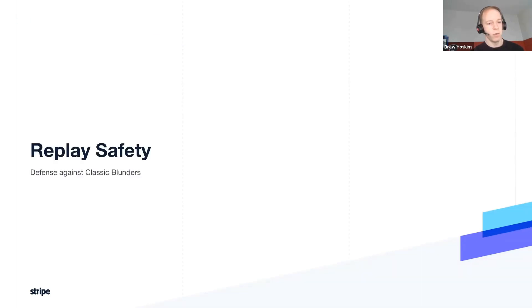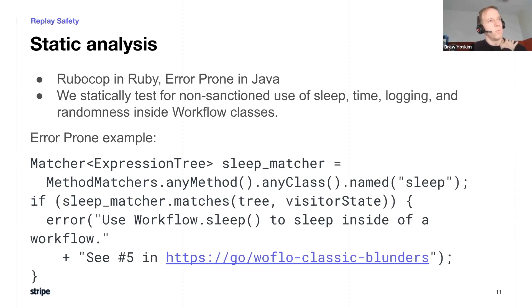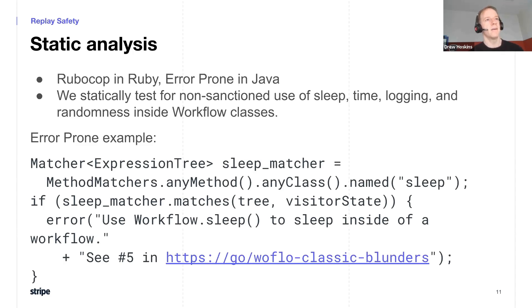Next, replay safety. Workflows can restart from the beginning and retrace execution history, and the new execution must match the old — the workflow must be pure, with no side effects or randomness. This can manifest as improperly using things like sleep or logging that would happen twice, or using default sleep which hard-blocks instead of Temporal's sleep which defers execution. We use RuboCop in Ruby and Error Prone in Java to statically detect calls to a fairly long list of forbidden functions. We direct them to our Classic Blunders document. We're thinking of open sourcing these rules — reach out if you're interested. It can't detect calls inside functions called from workflows, but it still catches a large percentage of these problems.